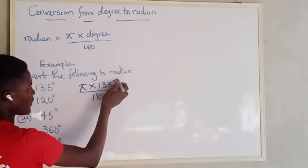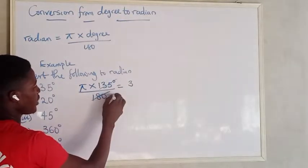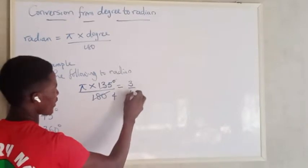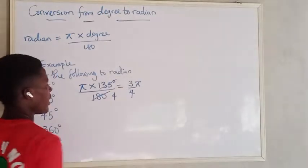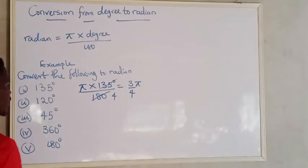And from here I know, 45 here will give me, 45 here will give me 4. So this is 3 over 4 pi and that's the radian conversion.